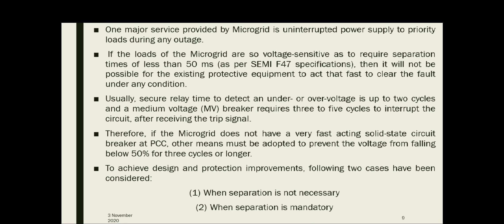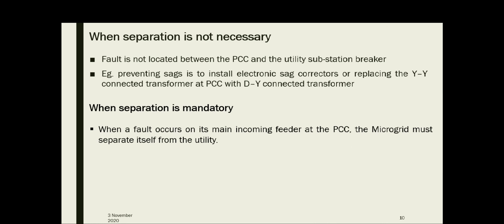Therefore, if the microgrid does not have a very fast-acting solid-state circuit breaker at PCC, other methods must be adopted to prevent the voltage from falling below 50% for three cycles or longer. To design protection improvements, the following cases must be considered: first, when separation of the microgrid from the grid is not necessary, and second, when separation is necessary.